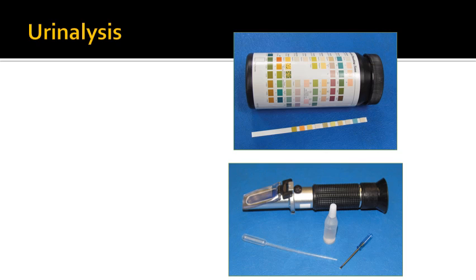Urinalysis is one of the more common and simple tests you can perform. It gives a good overall view of how the kidneys and urinary tract are functioning. One thing you can measure is specific gravity, which looks at the concentration of solutes within the urine. Specific gravity increases with dehydration, caused by decreased fluid intake. A refractometer or spectrometer can be used to determine specific gravity.